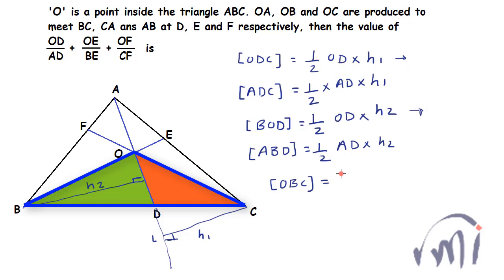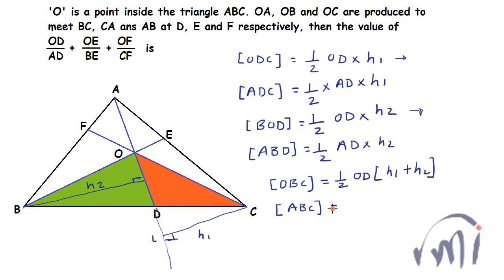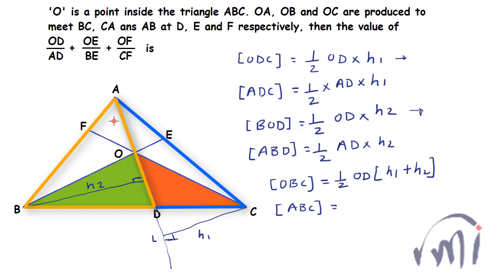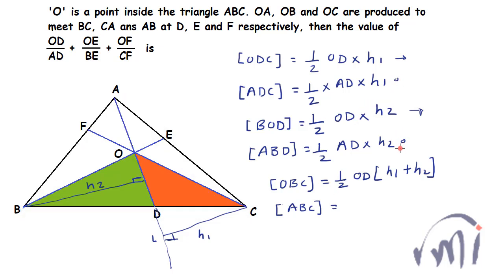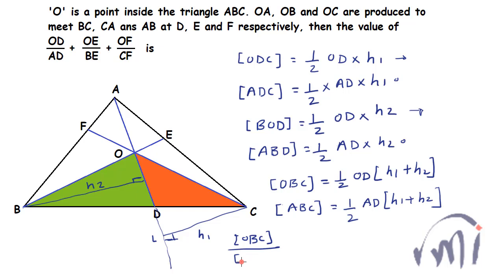So half times OD can be taken as common, with H1 plus H2 inside the bracket. Similarly, the area of triangle ABC can be written as the sum of the areas of triangles ADC and ABD, giving us half times AD times (H1 plus H2). The ratio of areas of triangle OBC and triangle ABC will therefore be equal to OD divided by AD, because the halves cancel and H1 plus H2 cancels.